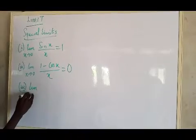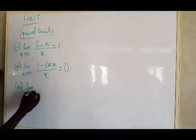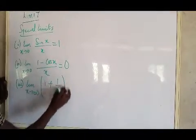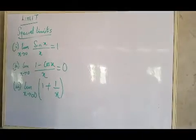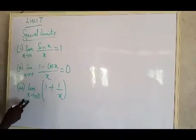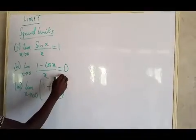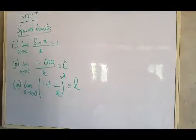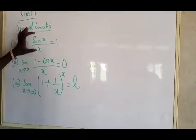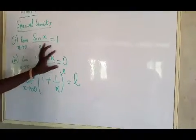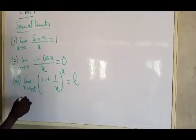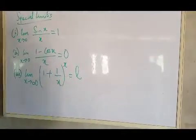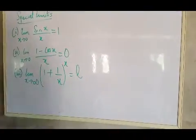The third special limit is: the limit as x tends to infinity of (1 + 1/x)^x equals e (exponential). So the first is sin(x)/x → 1, the second is (1 − cos x)/x → 0, and the third is (1 + 1/x)^x as x → infinity → e. If you use a calculator you will also see e there.